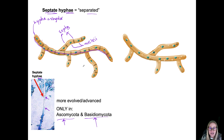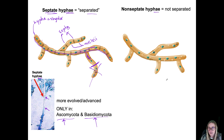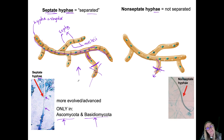Think of it like this: why would this be a more advanced trait? Well, if this part of the hyphae is damaged, the septa can just wall off right there and the rest of the material in those cells is saved. Whereas in a non-septate hyphae species, if it gets cut, all of the contents may come out — and that's not great. So this is a little bit more advanced evolutionarily. A non-septate hypha is just the opposite — there's no septa separating the nuclei, so everything can kind of co-mingle.